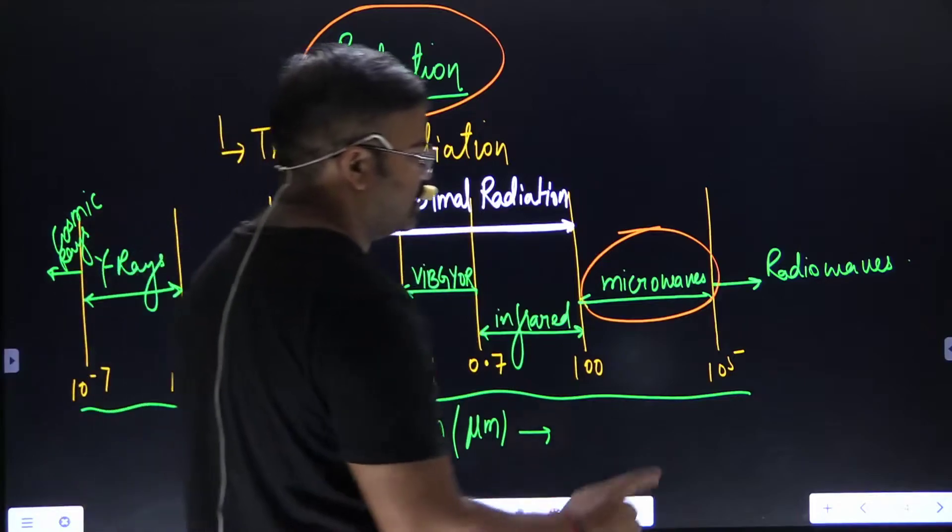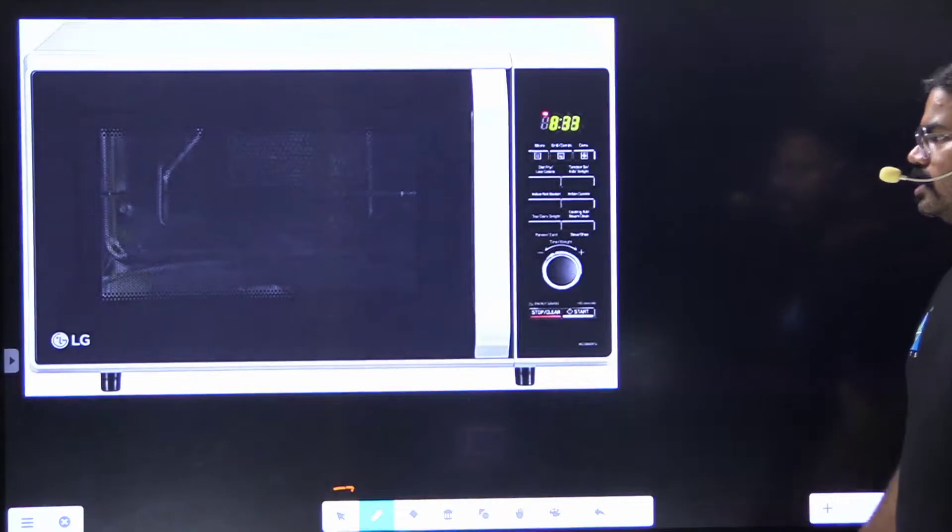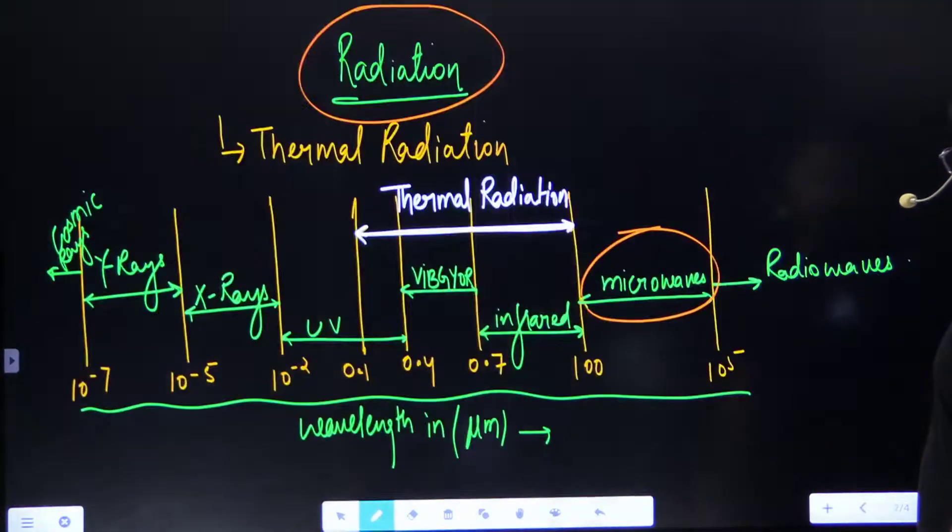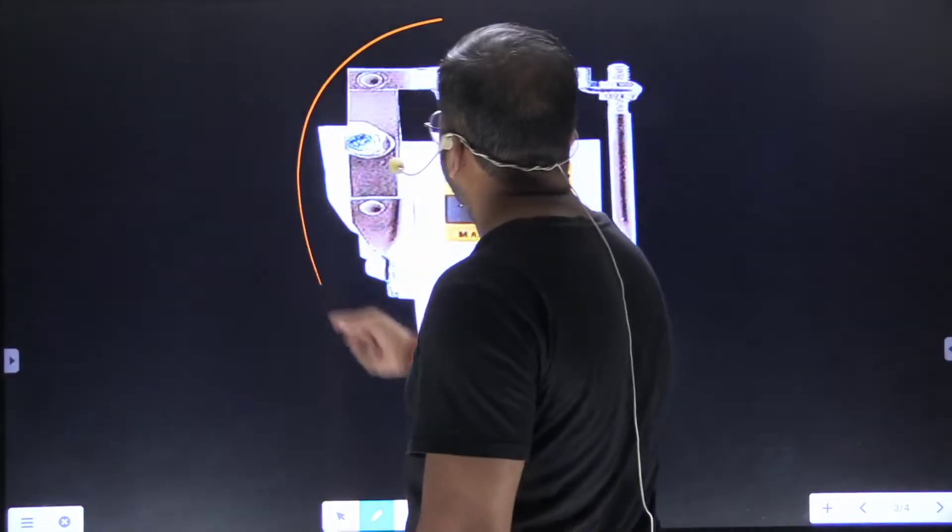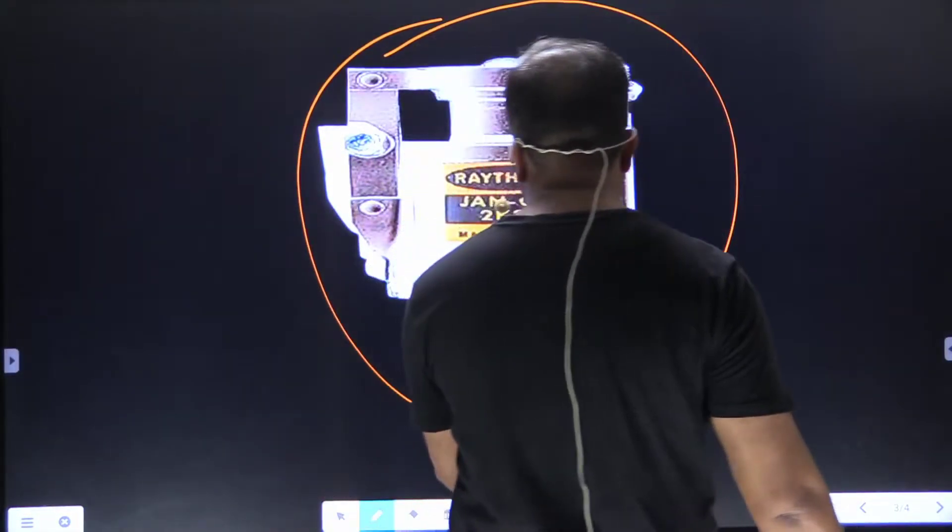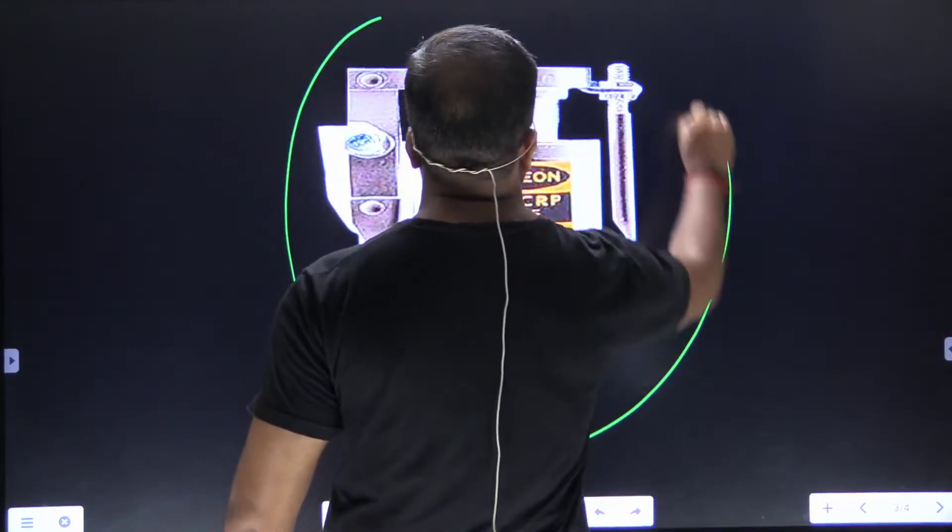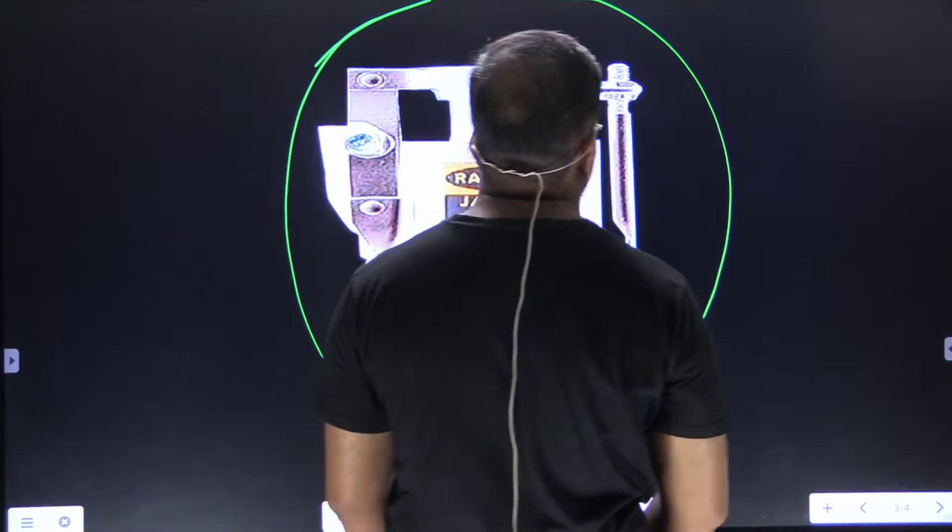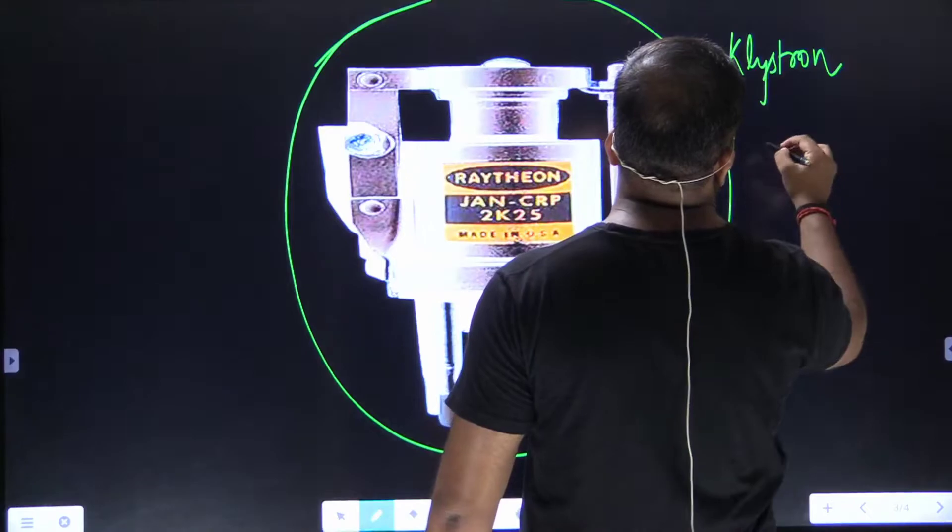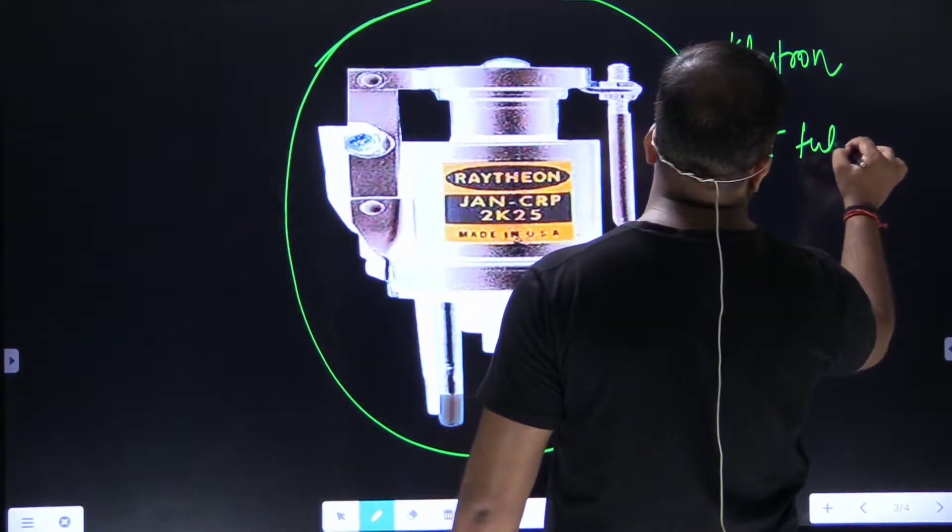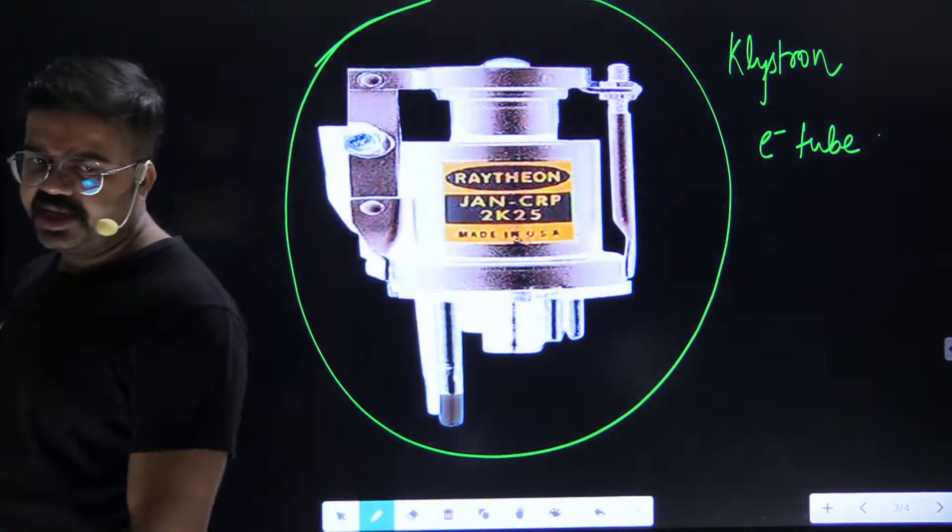So why are we excluding this from thermal radiation? This we have to study. See, this is your beautiful microwave oven. Now, all this happens because of this. Now the question arises, sir, what is this exactly? Let me tell you, this is something known as klystron, electron tube.